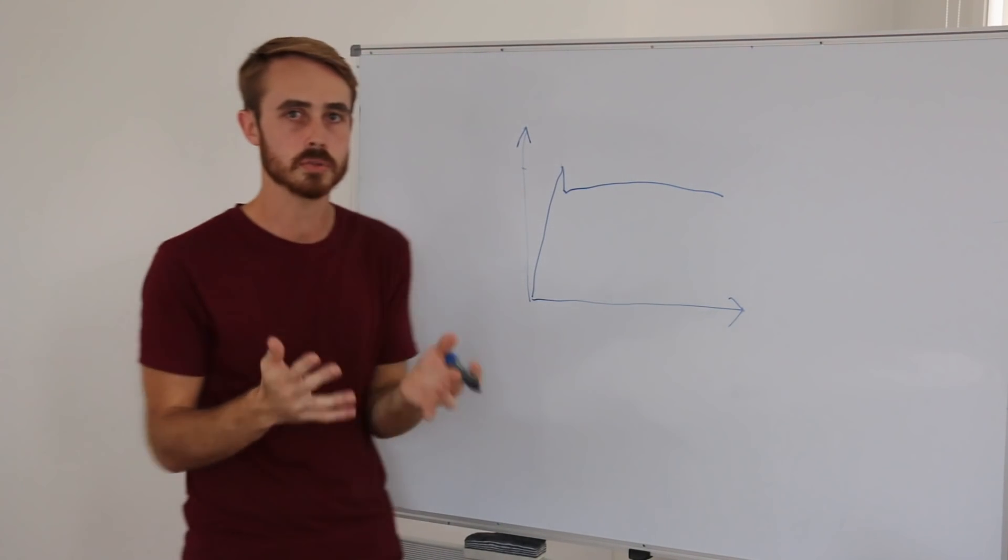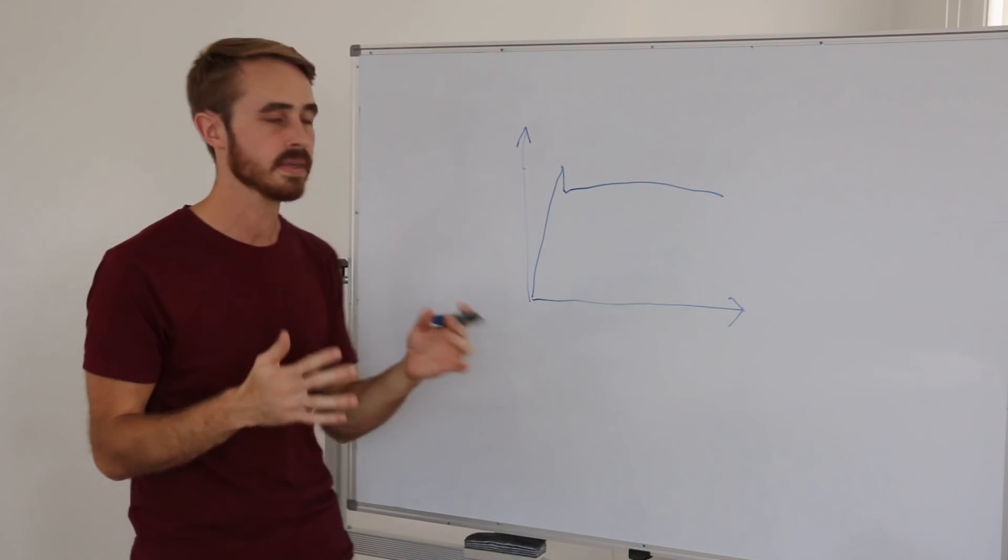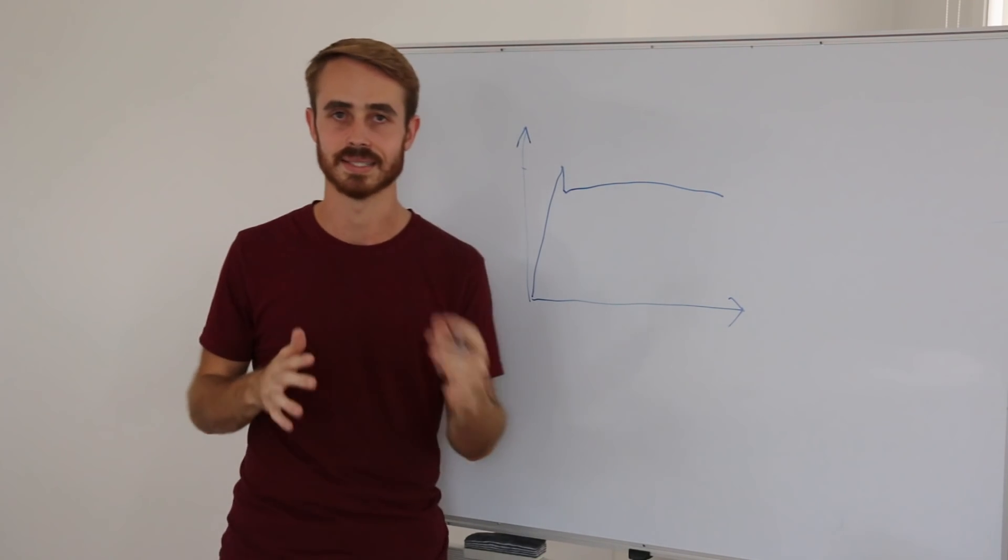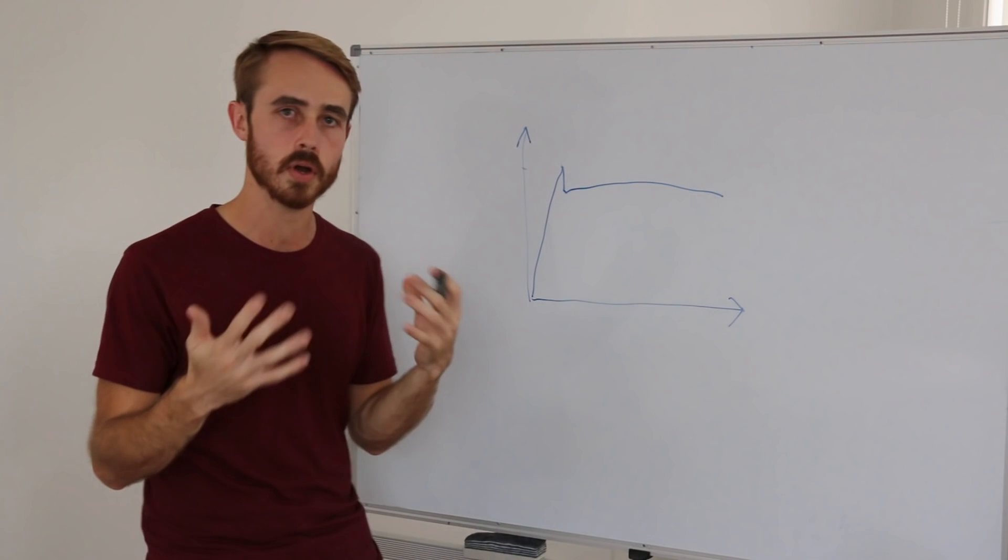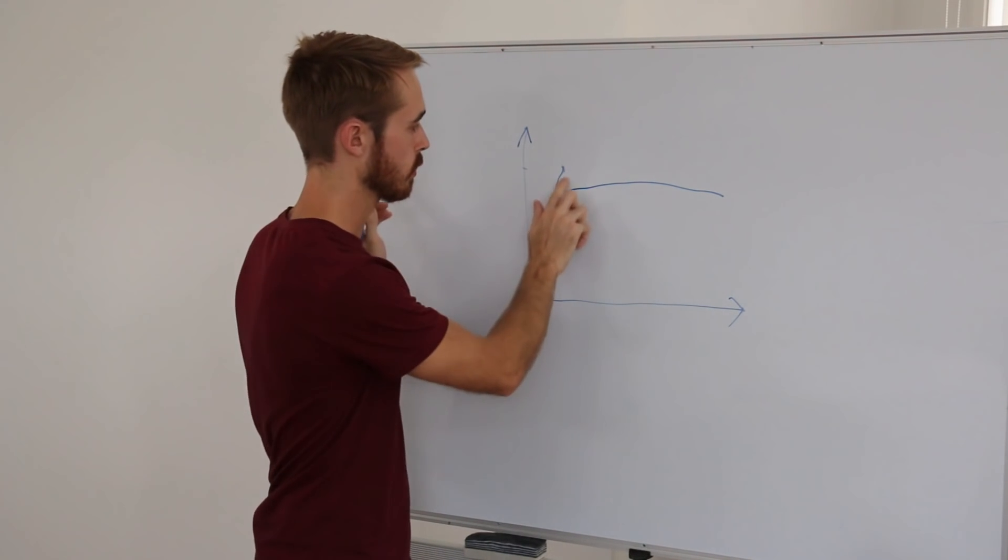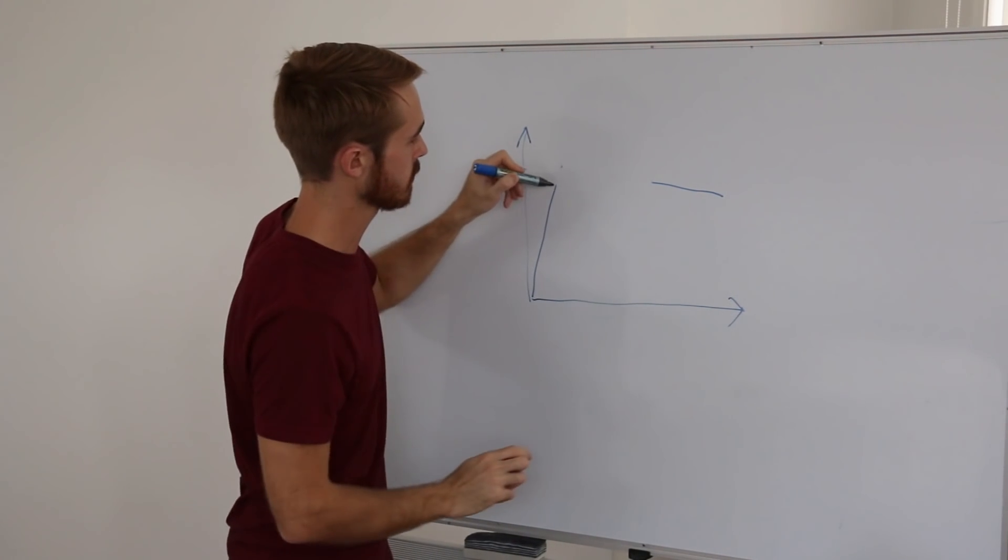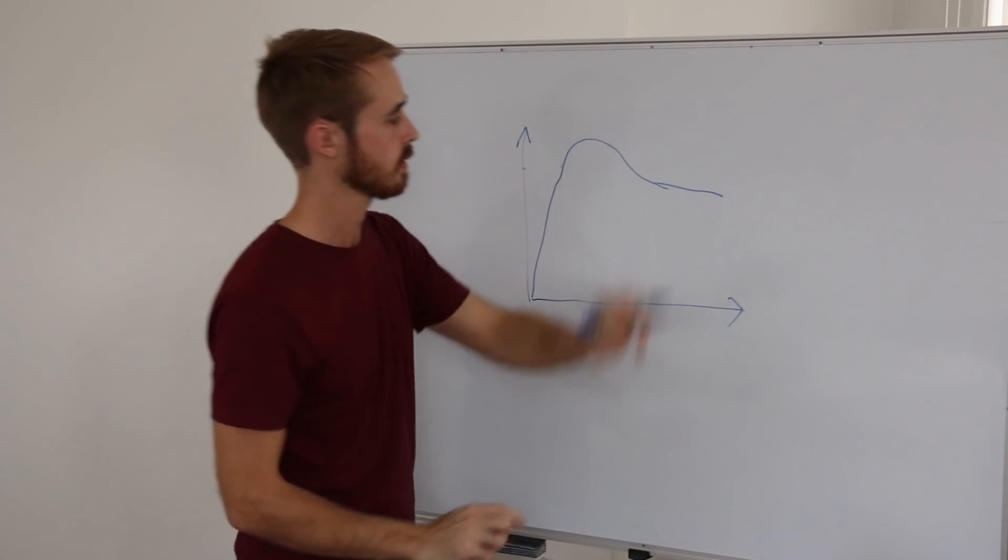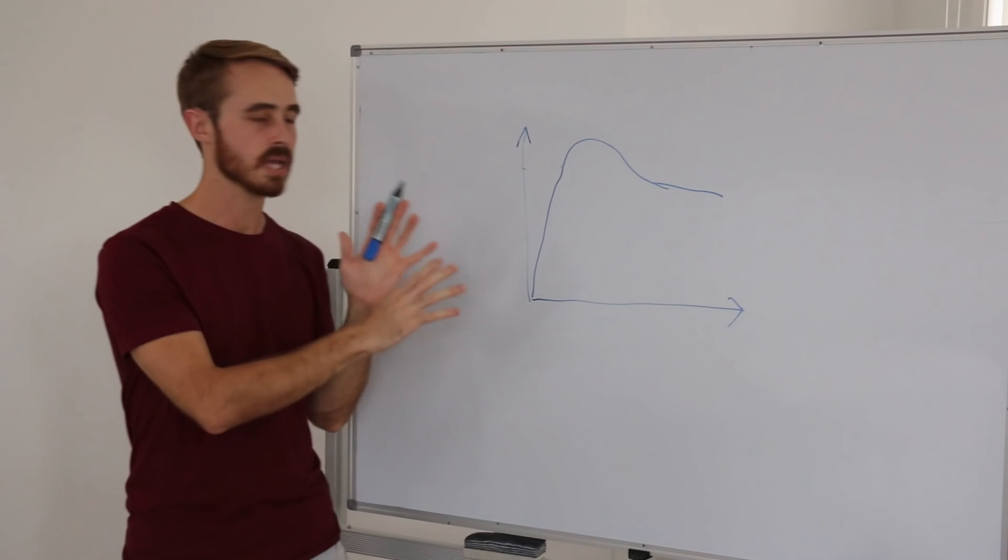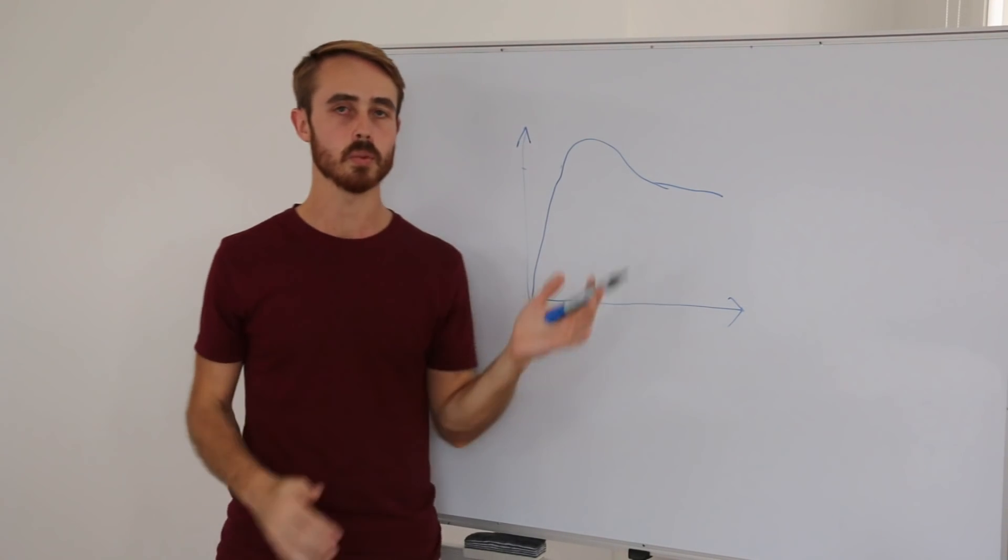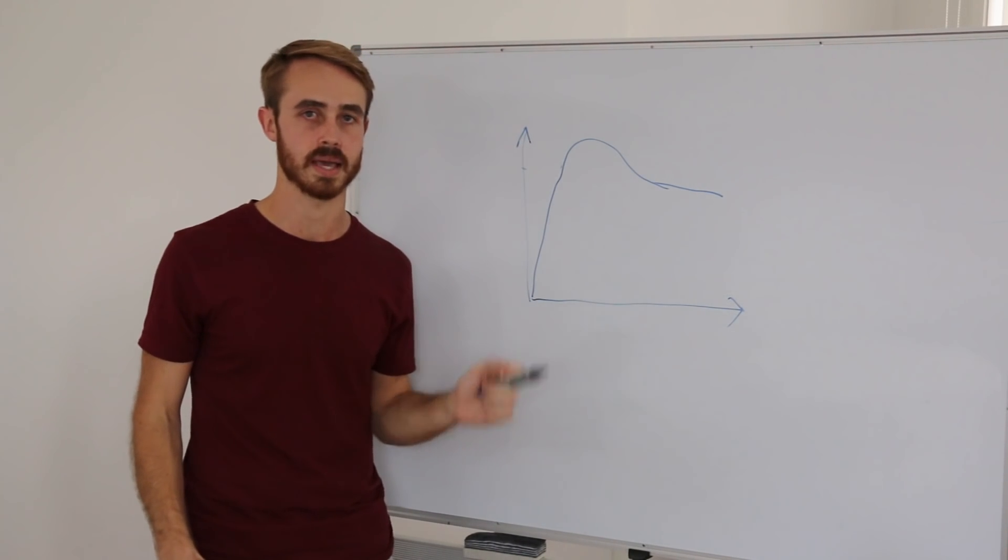But of course, being a real world system, nothing ever works out so that it's an instant step. Everything happens smoothly, and we've got rubber that's flexing all over the place. So when these curves smooth out a bit, we end up in something more like that. And this is kind of starting to get to the shape of what a real world tyre friction curve looks like.